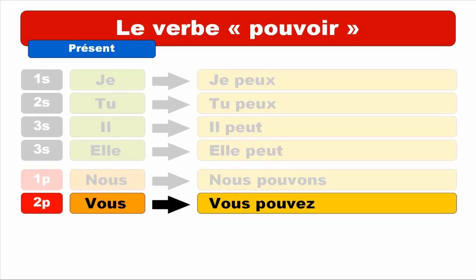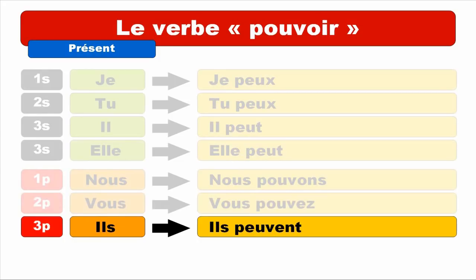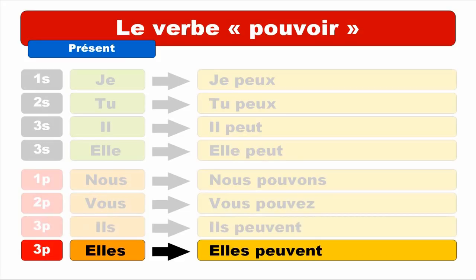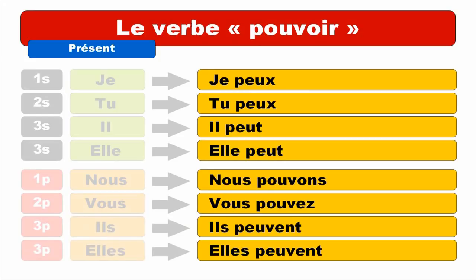As usual, you get ENT at the end but you don't pronounce it — you only pronounce ILS PEUVENT. And last but not least ELLES — it's actually the same form as IL. ELLES PEUVENT. Final ENT is not pronounced. ELLES PEUVENT. So let's see again: JE PEUX, TU PEUX, IL PEUT, ELLE PEUT, NOUS POUVONS, VOUS POUVEZ, ILS PEUVENT, ELLES PEUVENT.